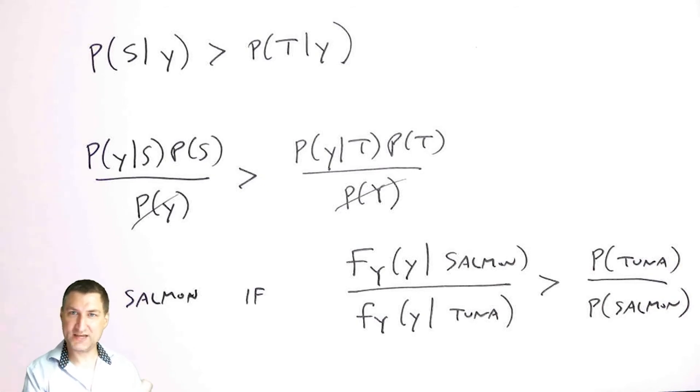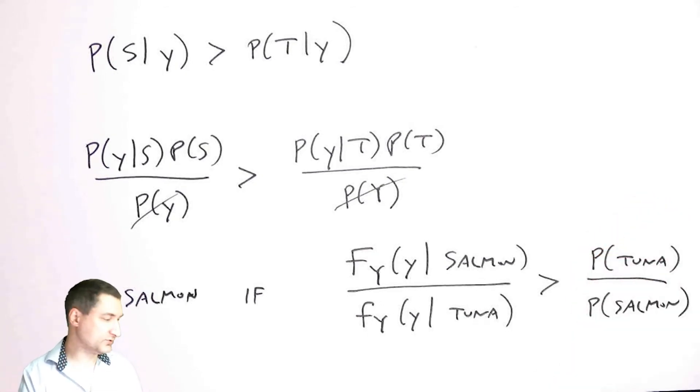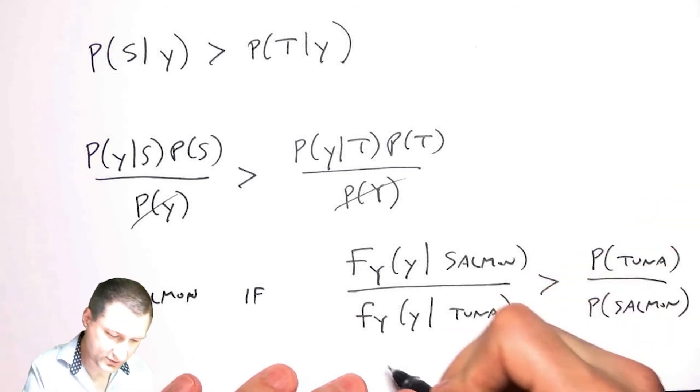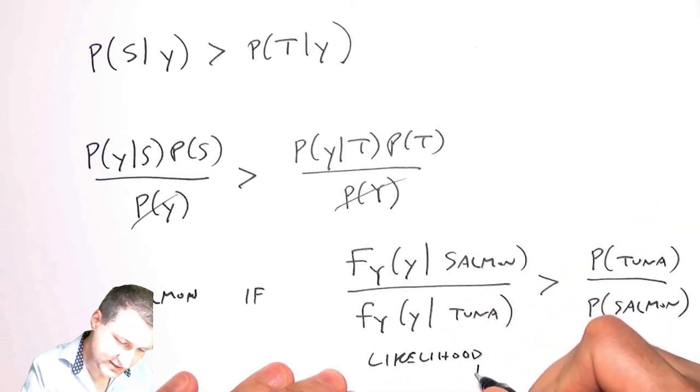This is kind of like the difference between what's called Bayesian estimation and maximum likelihood estimation. Bayesian estimation is what I do when I have some sort of a good model for these priors. Maximum likelihood estimation is what I do when I say, well, I don't really know what these numbers are, so I'm just going to assume that this right-hand side is equal to one. So this here is called the likelihood ratio, and this is like the introduction to what's called likelihood ratio testing.